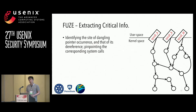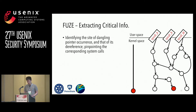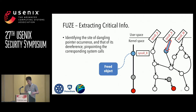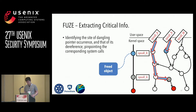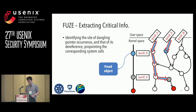FUSE facilitates kernel UAF exploitation generation in three steps. The first step is critical information extraction. During execution of the POC program, we identify both sites of dangling pointer occurrence and dereference, and to find the time window for heap spray, we pinpoint the corresponding system calls — indicated as syscall A and syscall B in the control flow graph. To do that, we combine ftrace and the kernel log to perform log analysis and extract this information.